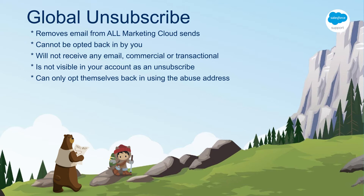There is nothing you can do from your side to opt this person into any of your lists or accounts. The only way they can get opted back in is by once again emailing our abuse email address and asking to have the restrictions lifted.